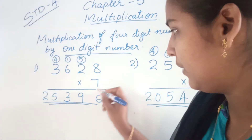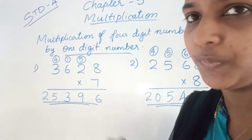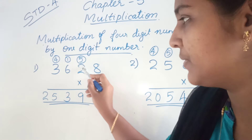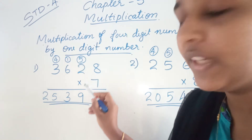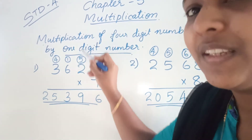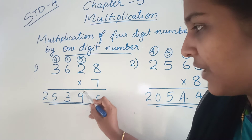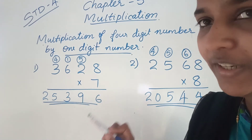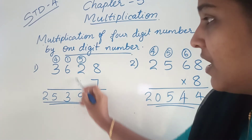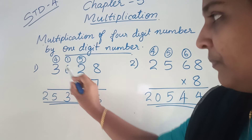Now you multiply 7 with 2. That is 7 twos are 14. 14 plus 5 is 19. From 19, you write 9 here and 1 carry over to the next place.